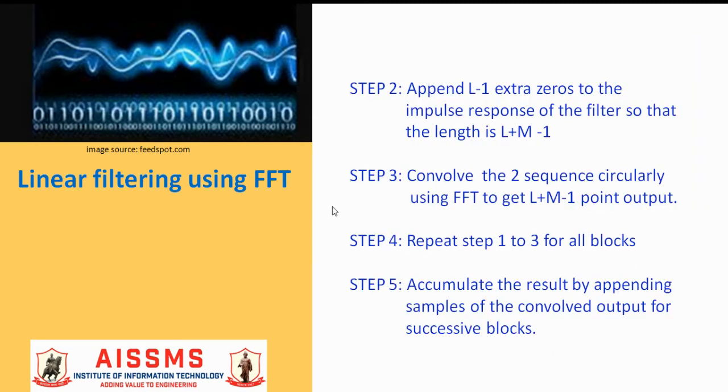Step number 2 is to append L minus 1 extra zeros to the impulse response of the filter so that the length is L plus M minus 1. Step 3 is to convolve the two sequences directly using FFT to get L plus M minus 1 point output. Step 4 is to repeat steps 1 to 3 for all blocks.